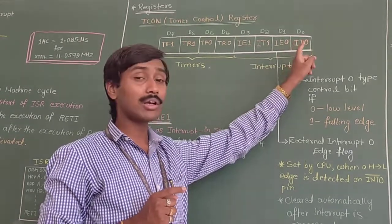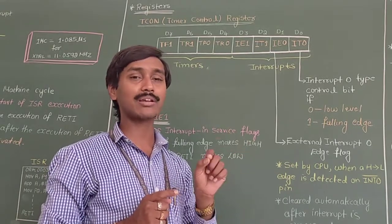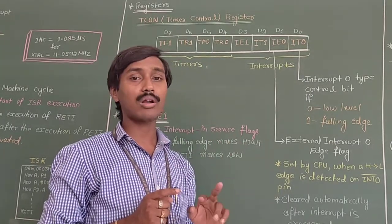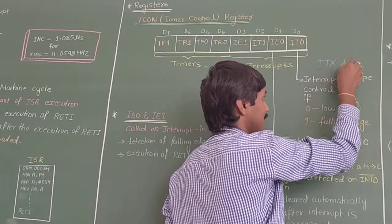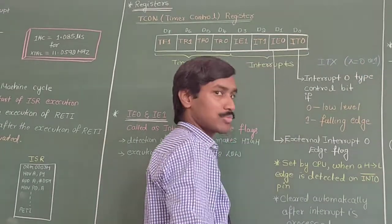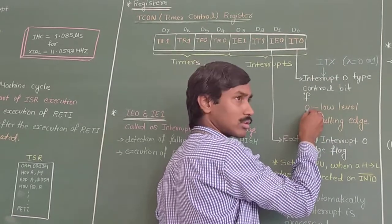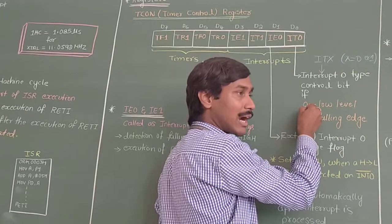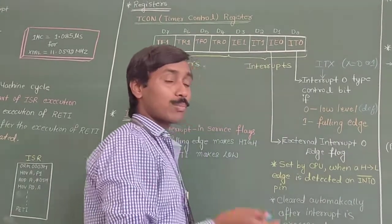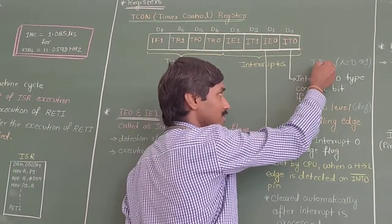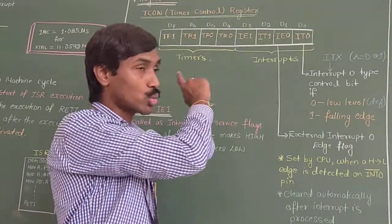To program this, we use the Timer Control Register bits D0 and D2. By configuring these 2 bits we can make the external hardware interrupts level triggered or edge triggered. In general, we write them as ITX, where X takes a value of 0 or 1 for IT0 and IT1 respectively. By making the ITX bit 0, both external hardware interrupts are configured as low level — this is the default mode. If we want both interrupts to be edge triggered, we make both ITX bits 1. We can even make one level triggered and one edge triggered, since we have 2 separate bits.